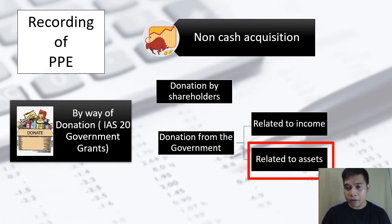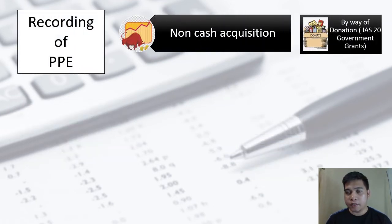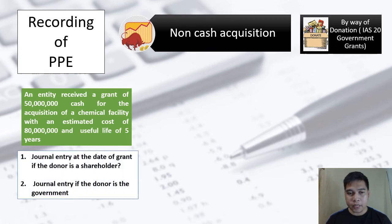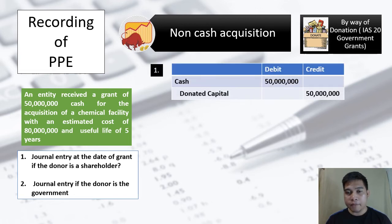Let's have an example. An entity received a grant of 50 million pesos cash for the acquisition of a chemical facility with an estimated cost of 80 million pesos and a useful life of five years. Requirement number one: journal entry at the date of grant if the donor is a shareholder. Requirement number two: journal entry if the donor is the government. Since in number one the donor is a shareholder, we do not need to recognize a liability or income account.